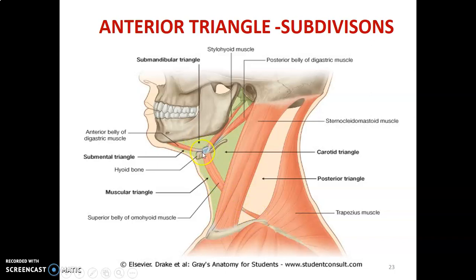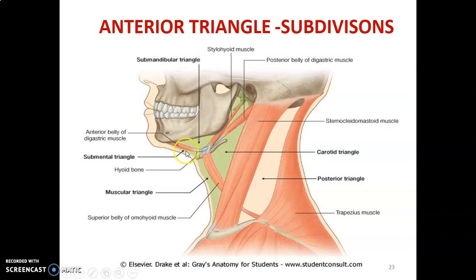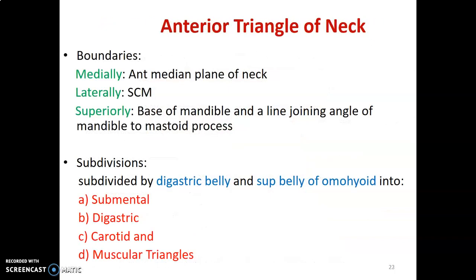Below the hyoid bone, the omohyoid divides anteriorly into the muscular triangle and laterally into the carotid triangle. The digastric muscle has a posterior belly and anterior belly. Between the anterior and posterior belly and the base of the mandible is the submandibular triangle. Between the anterior belly of the digastric on the right and left is the submental triangle. The muscular triangle is anterior to the superior belly of omohyoid and the carotid triangle is posterior to it on the lateral aspect.